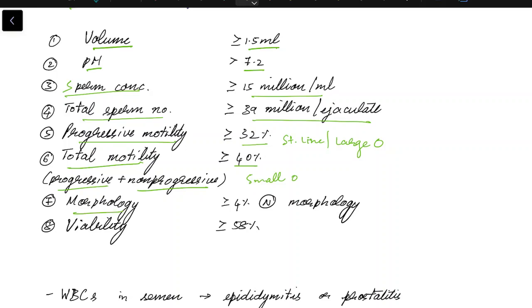The morphology should be greater than or equal to 4 percent normal morphology and the viability should be greater than or equal to 58 percent live sperm.